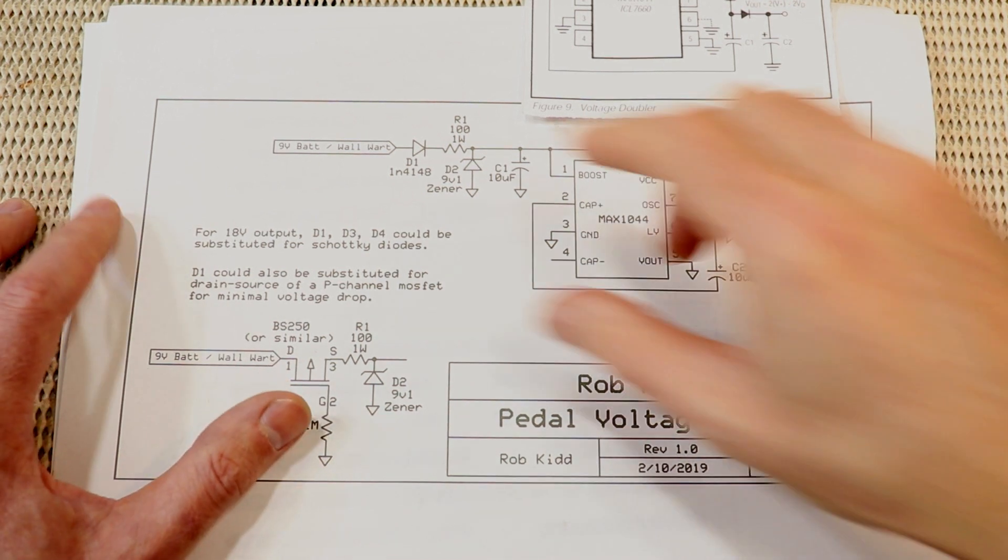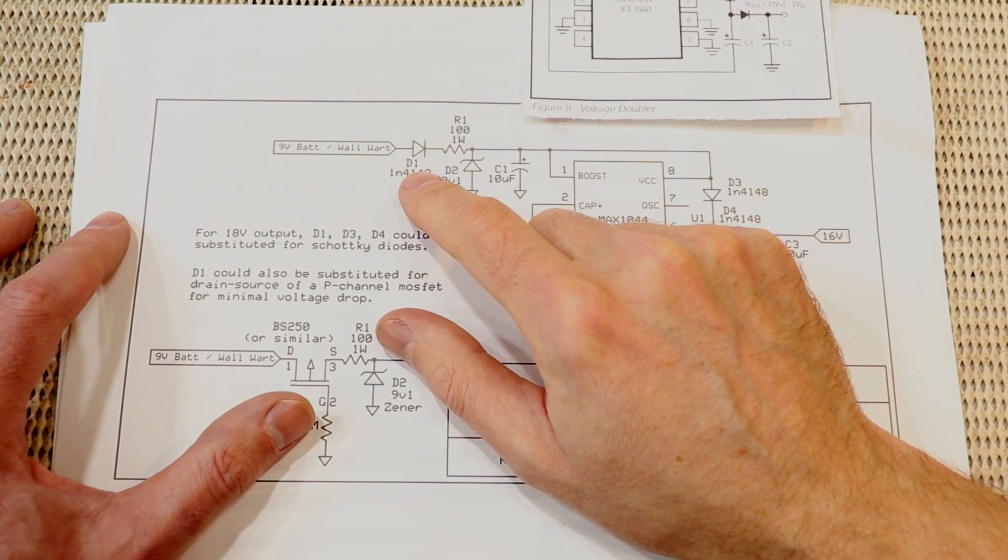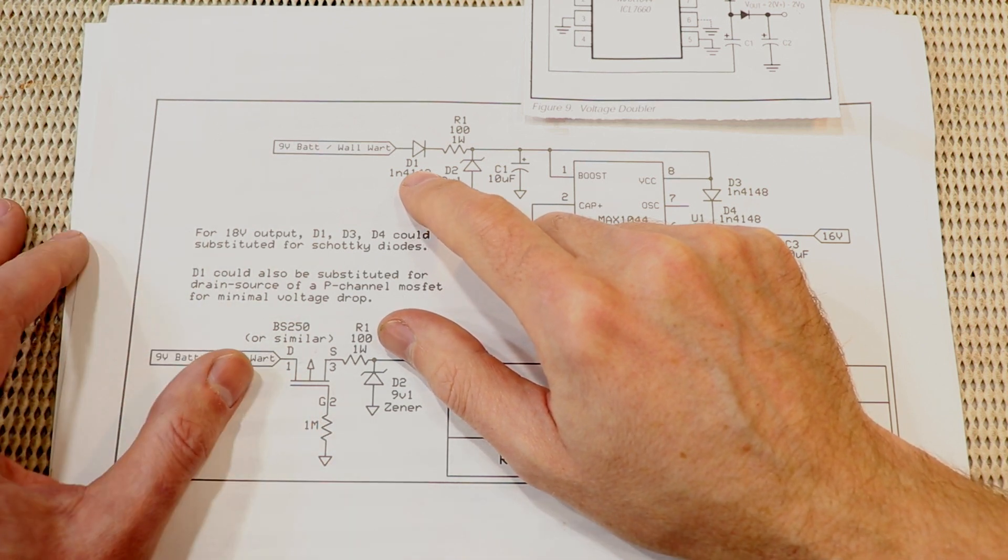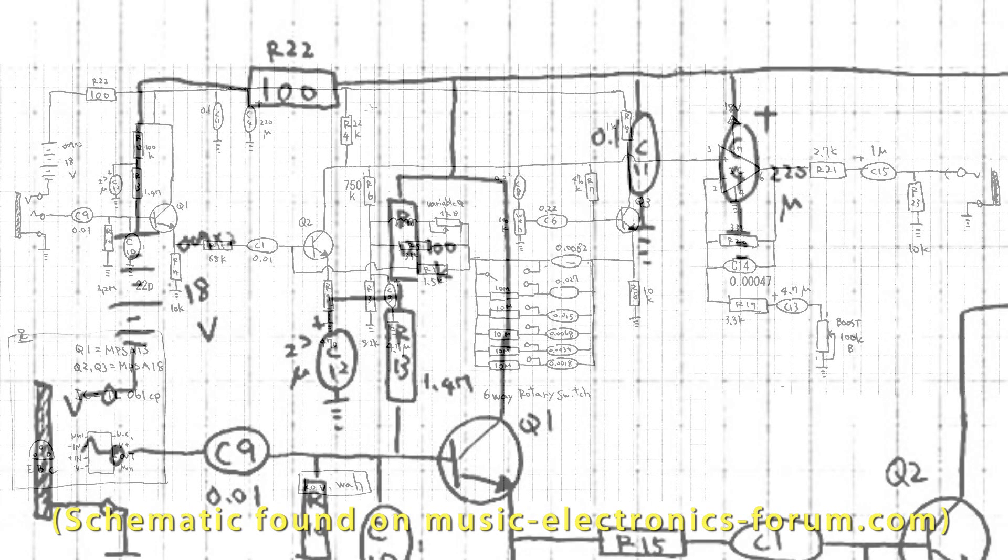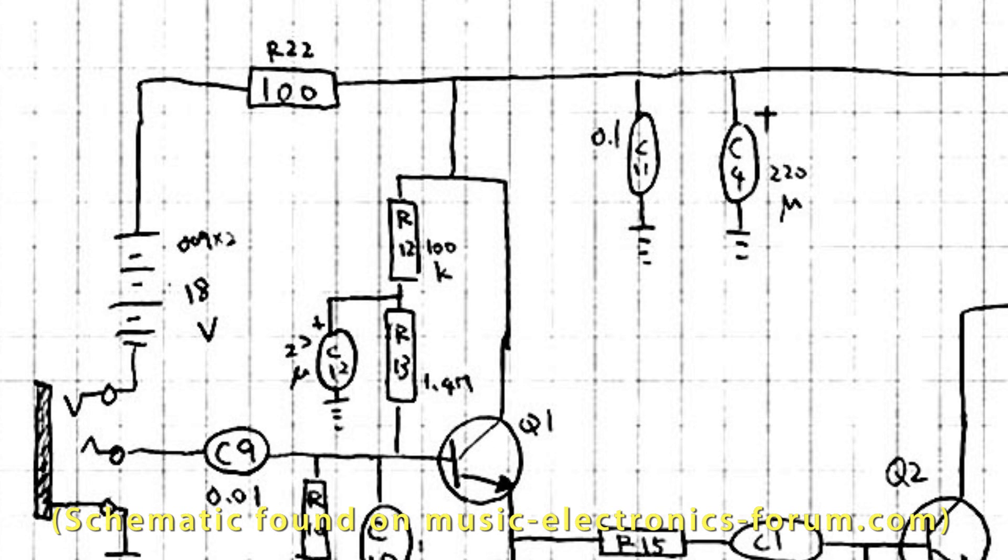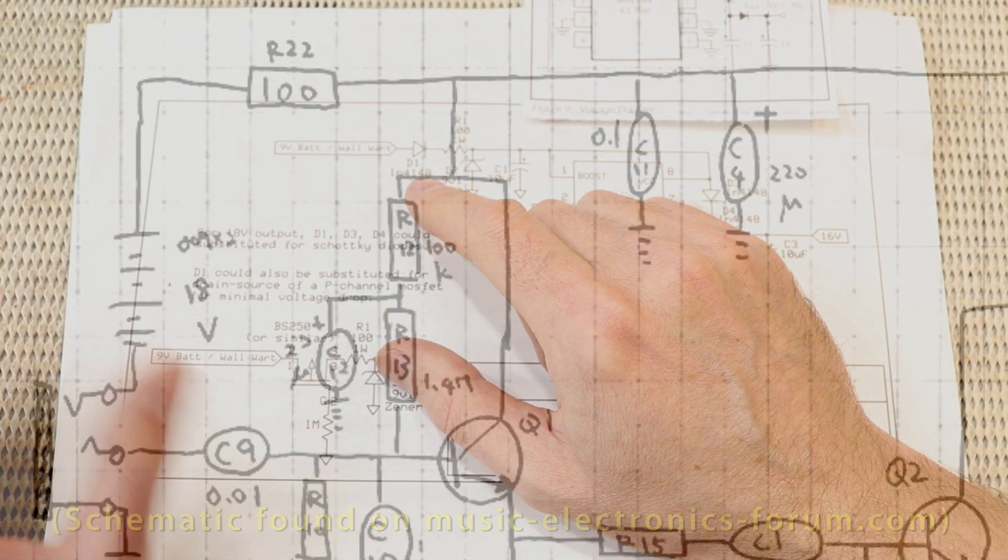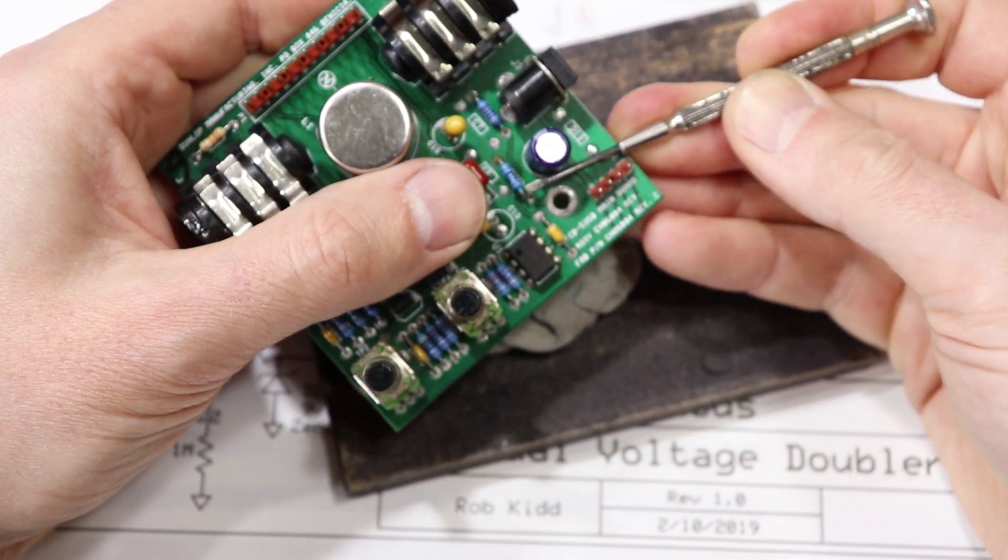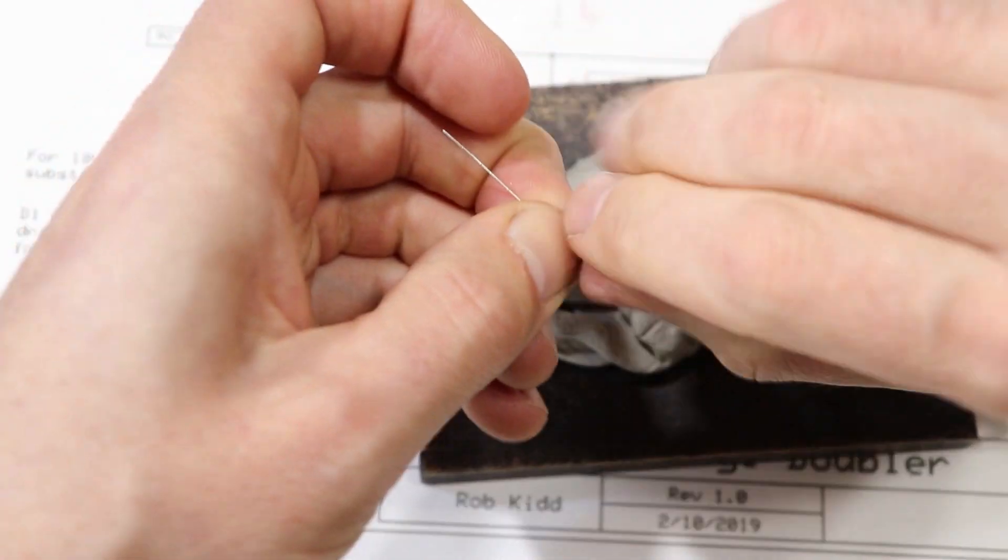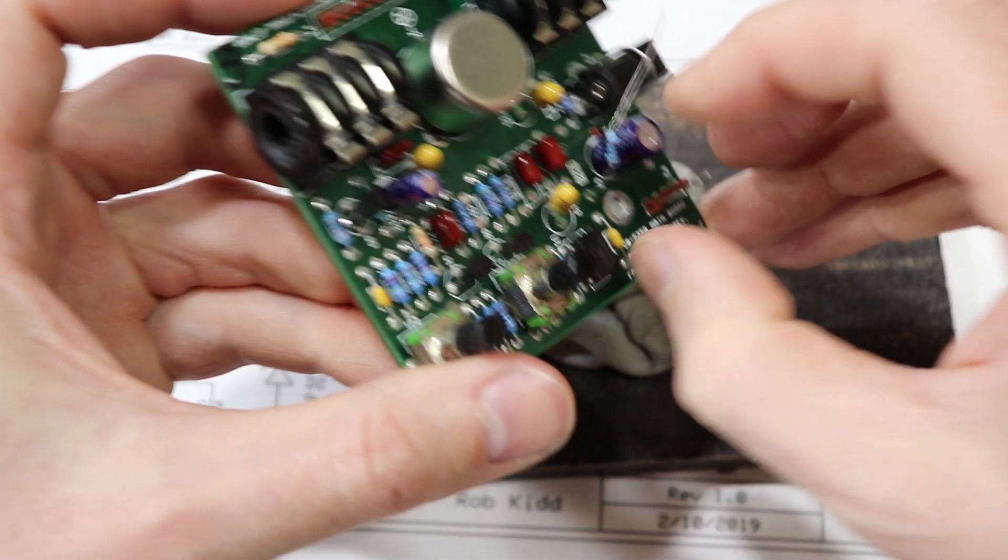And finally I've also put a reverse polarity protection diode up front because for some reason this pedal doesn't have one. Seems a strange oversight but as is there's nothing protecting the circuit from accidentally using a DC wall wart with the jack reversed or perhaps a 9 volt AC supply by mistake. For what it's worth if you do have this particular pedal and you don't want to necessarily mod it with a charge pump or whatever I'd recommend at least thinking about putting in a protection diode. If you remove this 100 ohm resistor here you can actually put both the resistor and the diode back into that same spot.